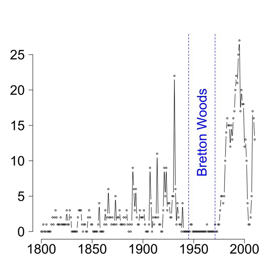The International Monetary Fund defines a global recession as a decline in annual per capita real-world GDP, purchasing power parity weighted, backed up by a decline or worsening for one or more of the seven other global macroeconomic indicators: industrial production, trade, capital flows, oil consumption, unemployment rate, per capita investment, and per capita consumption.